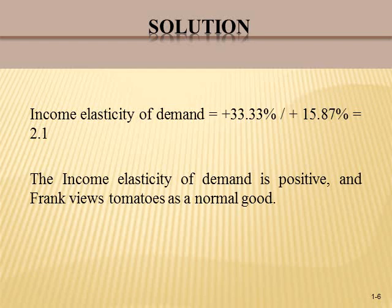So 33.33 divided by 15.87 gives us a positive value of 2.1. Because the income elasticity of demand is positive, Frank views tomatoes as a normal good. If we had a negative number, that would mean the good is inferior. A positive number like 2.1 means the good is a normal good. Thank you for watching my channel.